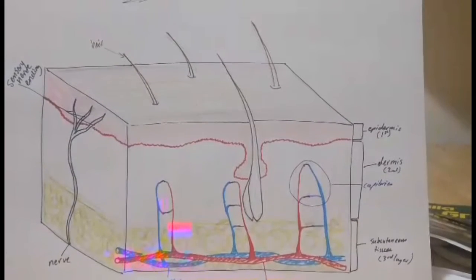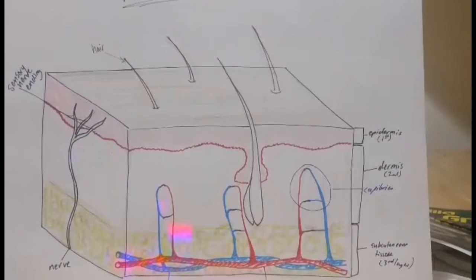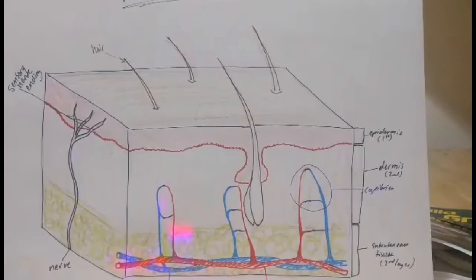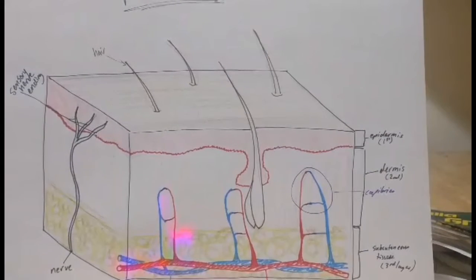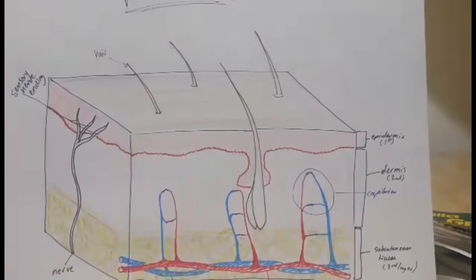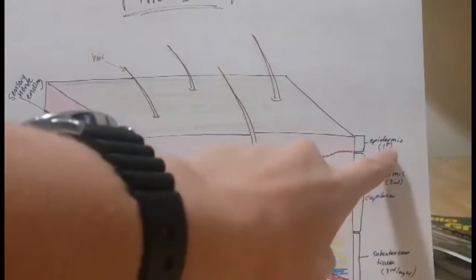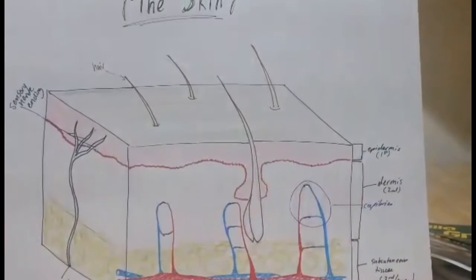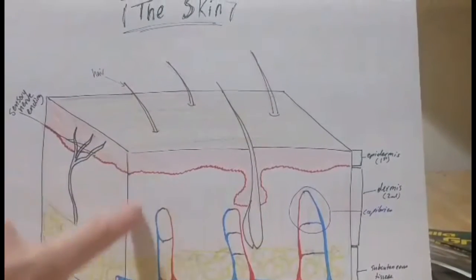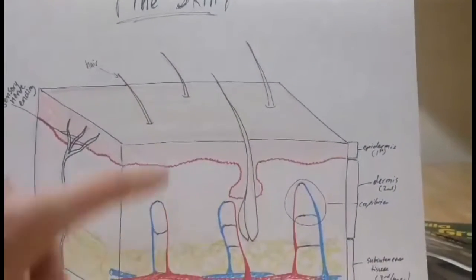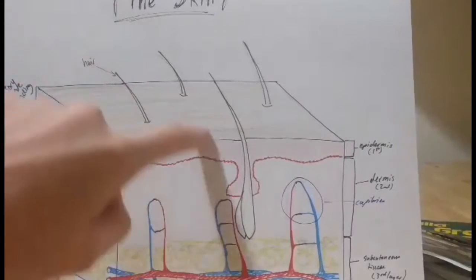Like abrasions, cuts, and scrapes, burns will also affect different layers of the skin. We grade them by first degree, second degree, or third degree. It's really easy to remember what kind of burn is what. First degree will only affect the first layer of skin, second degree will affect the first two layers, and third degree will extend all the way down into that third layer.